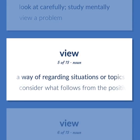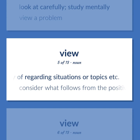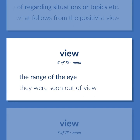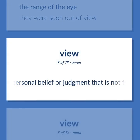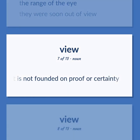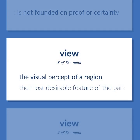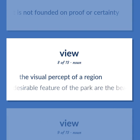View: A way of regarding situations or topics etc. Consider what follows from the positivist view. The range of the eye. They were soon out of view. A personal belief or judgment that is not founded on proof or certainty. The visual percept of a region. The most desirable feature of the park are the beautiful views.